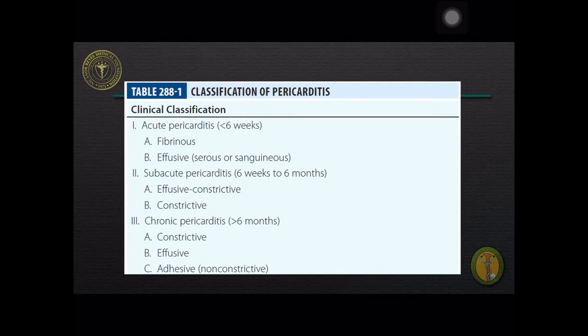Pericarditis can be classified based on the clinical presentation, etiology, and presumed relation to hypersensitivity or autoimmunity. The clinical classification includes acute pericarditis (less than 6 weeks), subacute pericarditis (6 weeks to 6 months), and chronic pericarditis (more than 6 months).